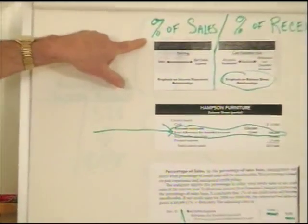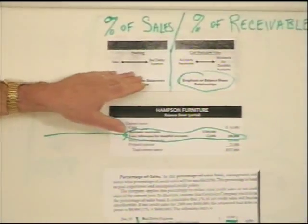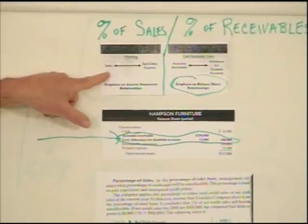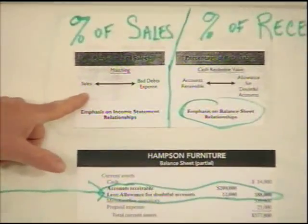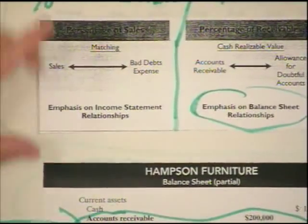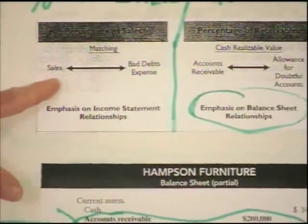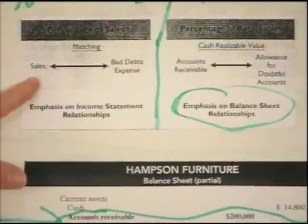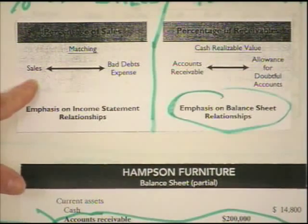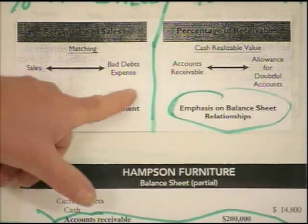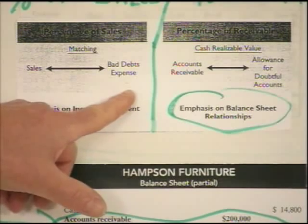When we do the percentage of sales, what we're attempting to do is match our bad debt against the sales that actually produce them. We satisfy the matching principle here by saying: if we didn't have sales on credit, we wouldn't have bad debt. So we take whatever percentage of credit sales we have and record that as our bad debt expense.